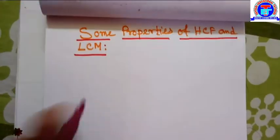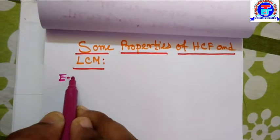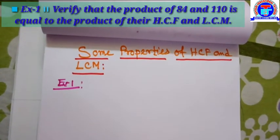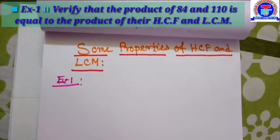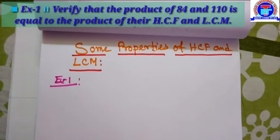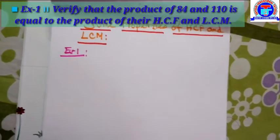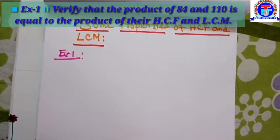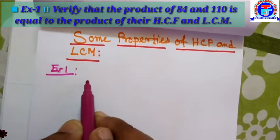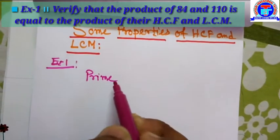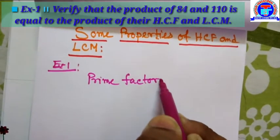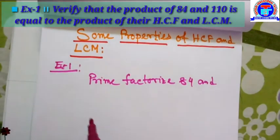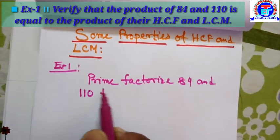Example number one. The question is: verify that the product of 84 and 110 is equal to the product of their HCF and LCM. So let's try to find out the solution. We write the prime factorization of 84 and 110.